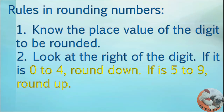So what are the rules in rounding numbers? These are the things you need to remember when rounding numbers. One, know the place value of the digit to be rounded. Two, look at the digit to the right. If it is 0 to 4, round down. If it is 5 to 9, round up.